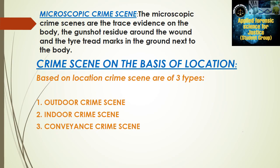Crime scene on the basis of location: based on location, crime scenes are of three types — first, outdoor crime scene; second, indoor crime scene; and third, conveyance crime scene.